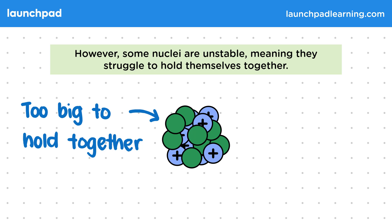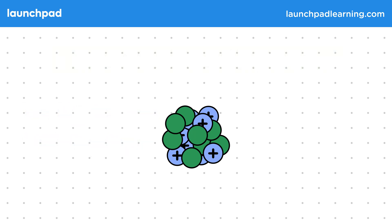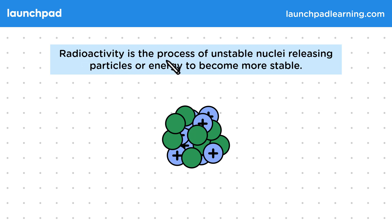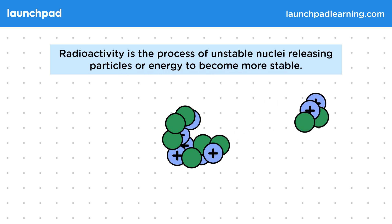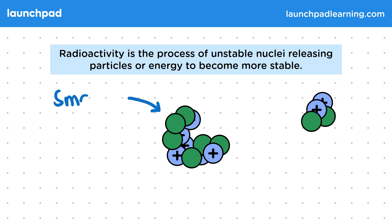So what actually happens when a nucleus is unstable? Well, radioactivity is the process of unstable nuclei releasing particles or energy to become more stable. We can also say that the nucleus decays. During nuclear decay, the nucleus becomes smaller, in a similar way to releasing some of the tennis balls, and it also becomes more stable.